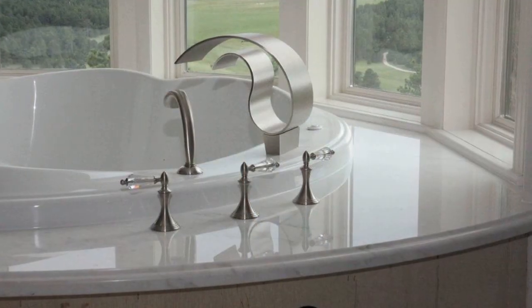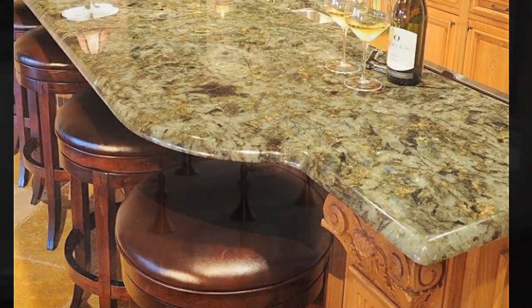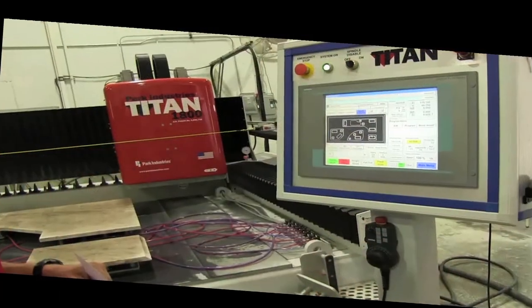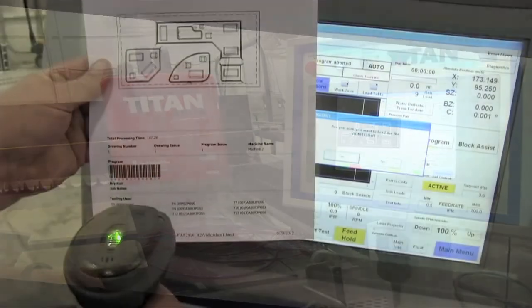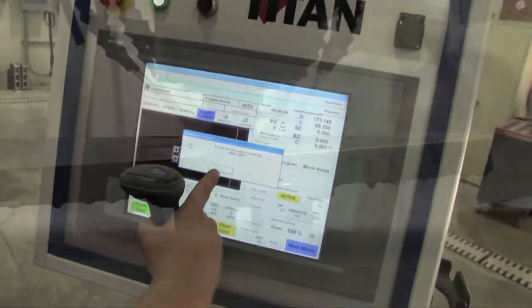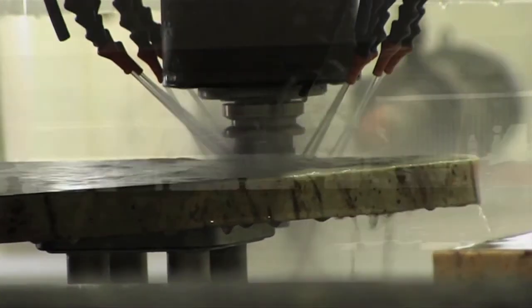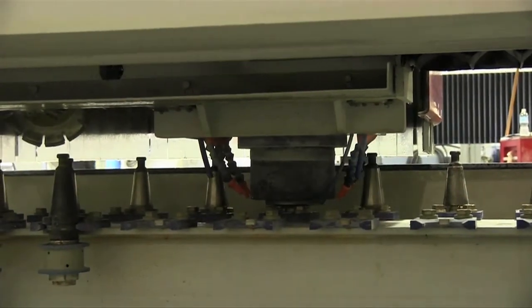After the stone has been cut, the edge detail that you have selected will be applied utilizing the state-of-the-art CNC router, the Titan. The Titan is an automatic edge profiling machine that will produce beautiful, crisp edge details utilizing diamond tools. The Titan is programmed with the edge profile that you have selected.